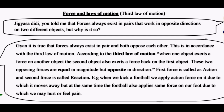Jigasa didi, you told me that force always exists in pairs that work in opposite directions on two different objects, but why is it so? It is true that force always exists in pairs and both oppose each other. This is in accordance with the third law of motion. According to the third law of motion, when an object exerts a force on another object, the second object also exerts a force back on the first object. These two opposing forces are equal in magnitude but opposite in direction.